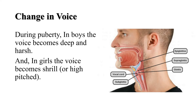The next change is change in voice. Voice is produced due to the voice box or larynx present in the throat. At puberty, the muscles attached to the voice box also grow, and this can be easily seen from the outside of the throat. The voice box in boys is larger than in girls and can be seen as the Adam's apple. The voice box in girls is hardly visible. In boys, the voice becomes deep and harsh, while in girls the voice becomes shrill or high-pitched.